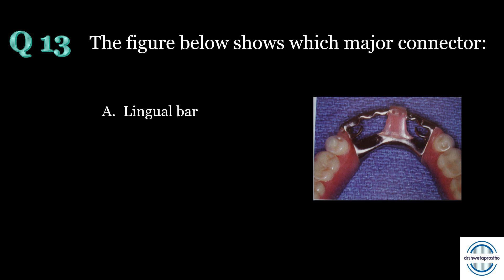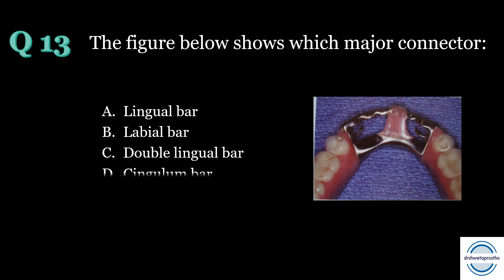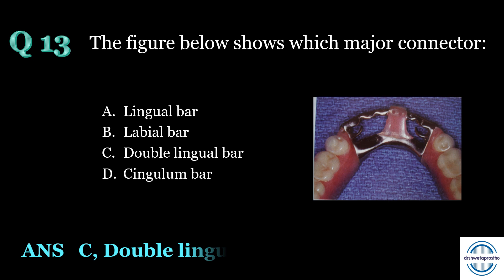Question number thirteen: the figure below shows which major connector? A. Lingual bar, B. Labial bar, C. Double lingual bar, D. Cingulum bar. The answer is C, double lingual bar. It consists of a cingulum bar and a lingual bar, also called Kennedy's bar as previously discussed. The previous image was from Stewart and this image is from McRacken. Both images are very important from an MCQ point of view.